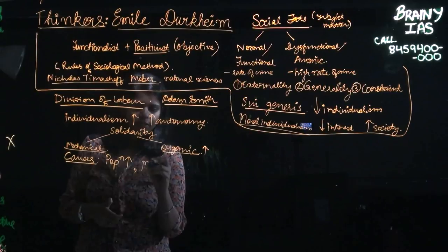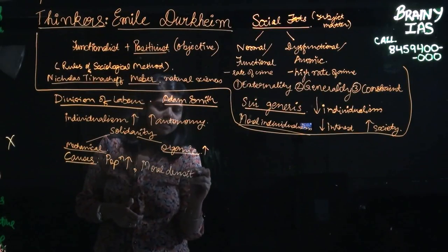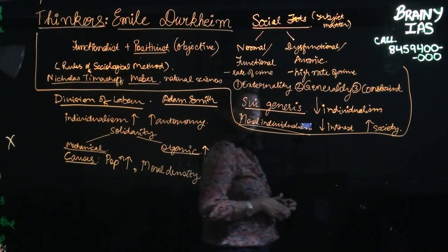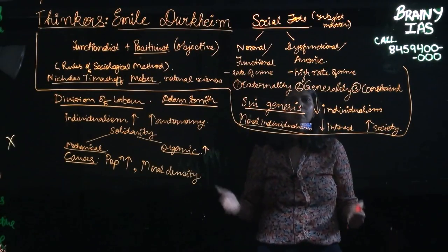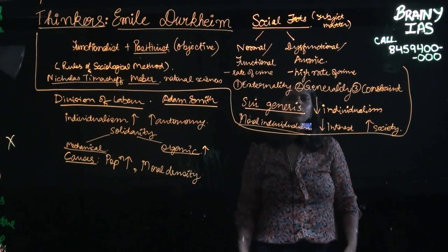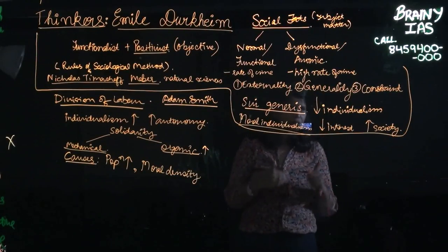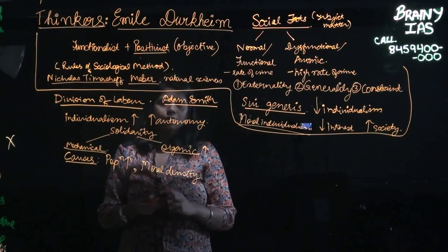Then he says that if there is an increase in moral density. The moral density is basically when the interaction between people increases. So when you are working in a very diverse system and everyone is a master of some trade, you happen to interact and then the whole system gets going. So when there is an increase in moral density, there is division of labor.